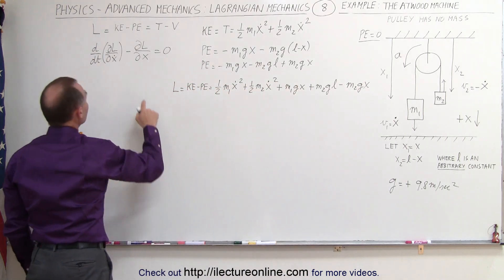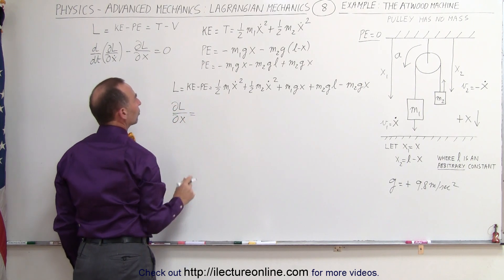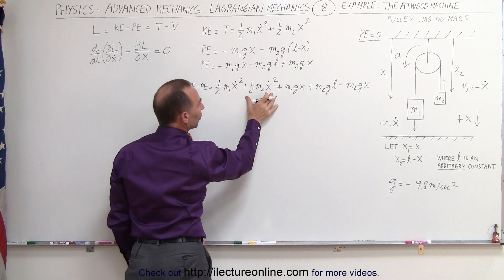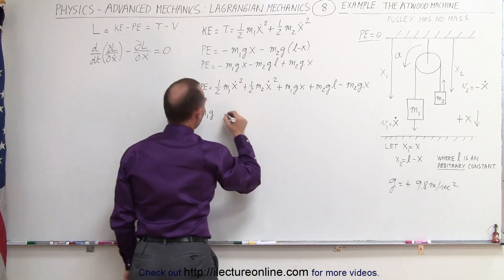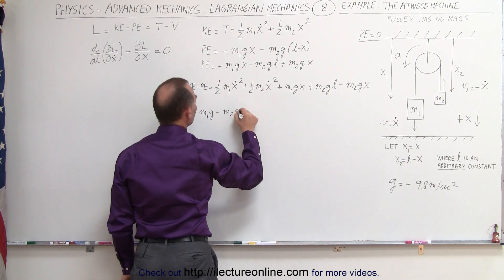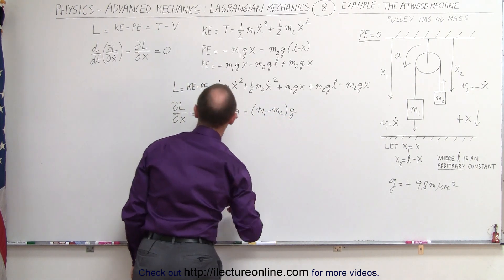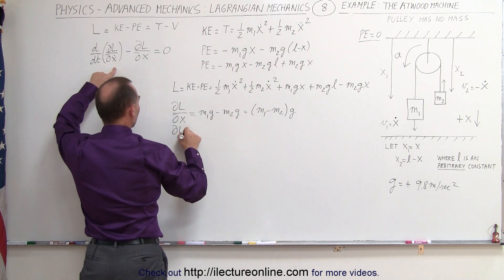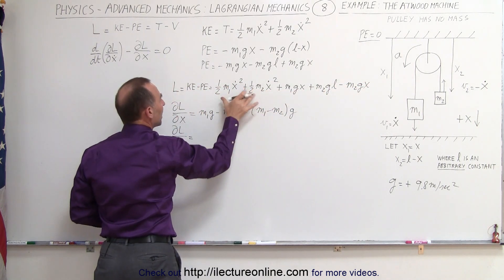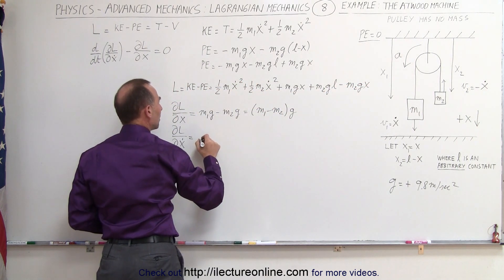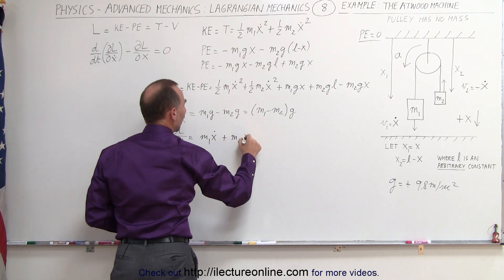Now we're ready to calculate the partial of the Lagrangian with respect to x. The kinetic energy terms and the m2·g·l term go to zero, so we end up with m1·g minus m2·g, which can be written as (m1 minus m2) times g. For the partial of L with respect to x-dot, the potential energy terms go to zero, and we get m1·x-dot plus m2·x-dot.